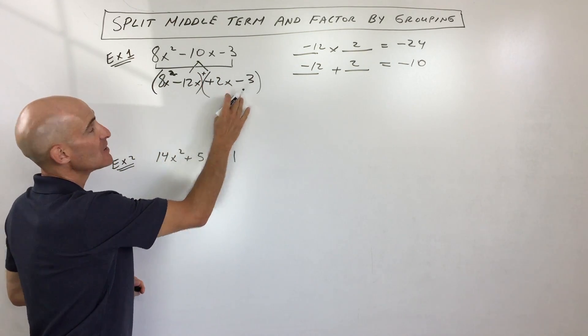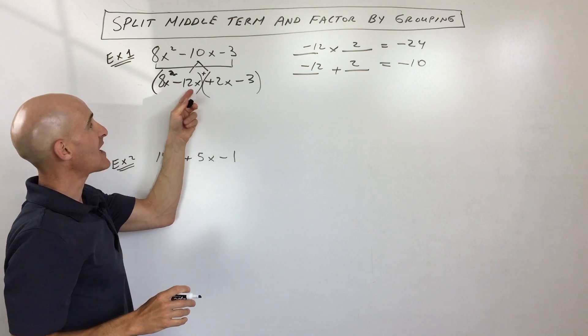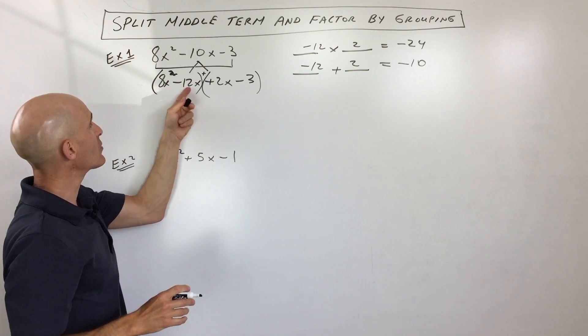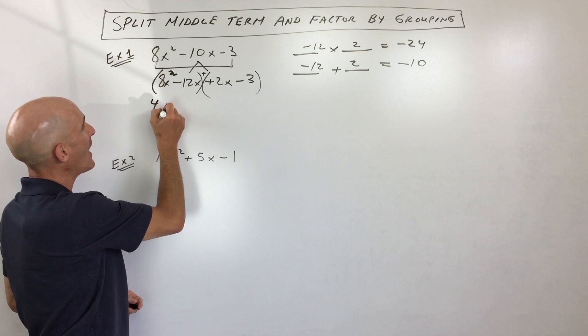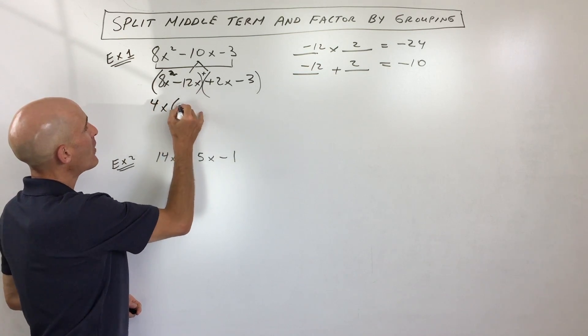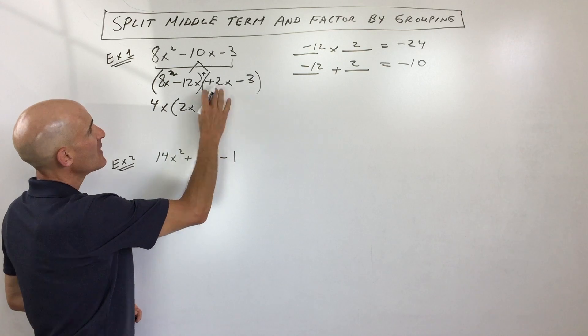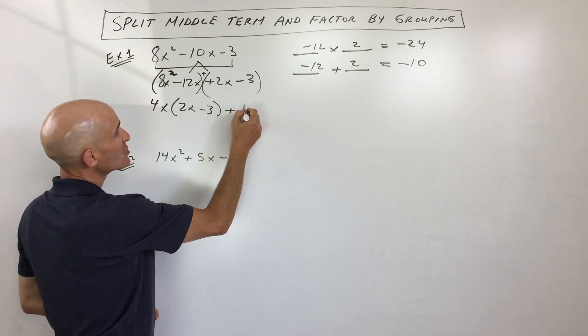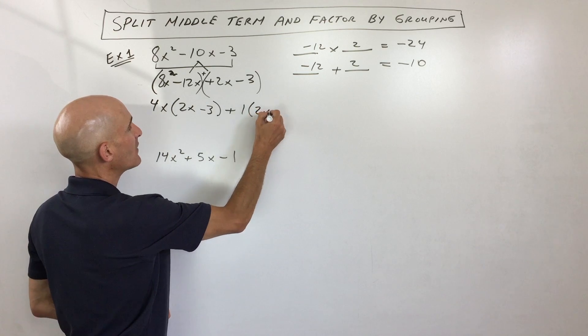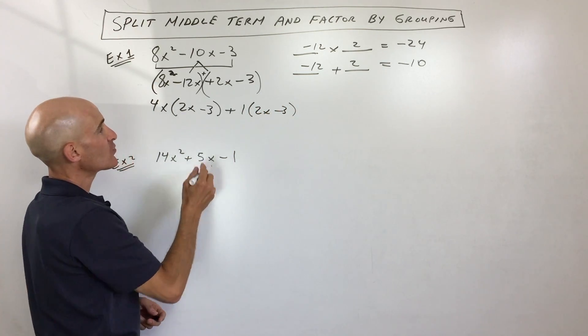And then what you do is you factor out the greatest common factor out of both of these groups. So here it looks like the greatest common factor is 4x. So if I divide this by 4x I'm left with 2x. If I divide this by 4x I'm left with negative 3. Here the greatest common factor is really just a 1 because you can't divide anything out of those. There's nothing in common. So we're left with 2x minus 3.